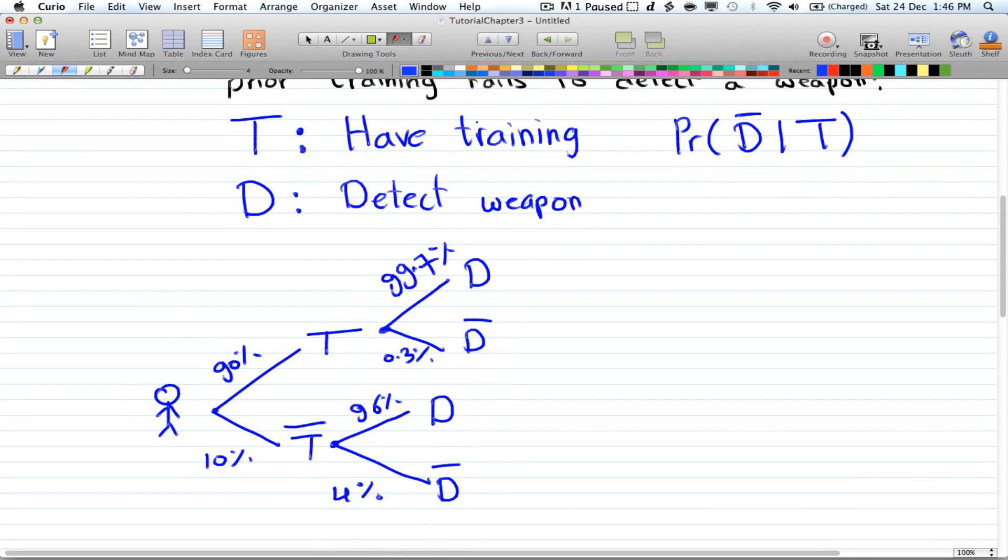Since we're dealing with probability, we're going to divide everything by 100 just to get rid of the percentage sign. So here you have 0.9, 0.1, 0.04, 0.96, 0.003, and 0.997.